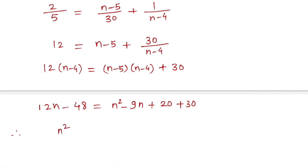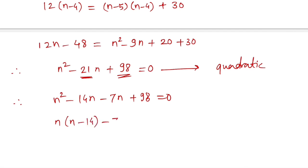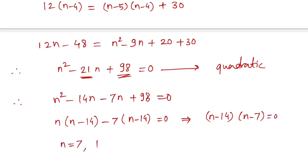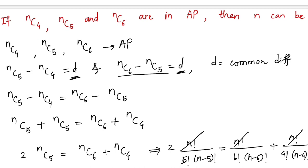Therefore we have n squared minus 21n plus 98 equals 0. This is a quadratic equation. Since 14 times 7 is 98 and 14 plus 7 is 21, we factor as (n minus 14)(n minus 7) equals 0, giving n equals 7 and n equals 14. So for these two values, 7 and 14, n choose 4, n choose 5, and n choose 6 are in arithmetic progression.